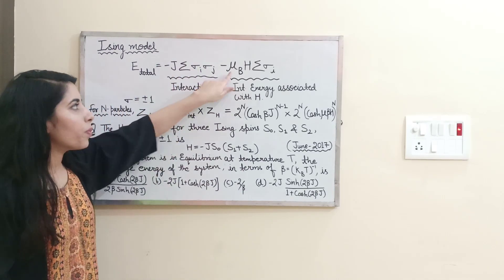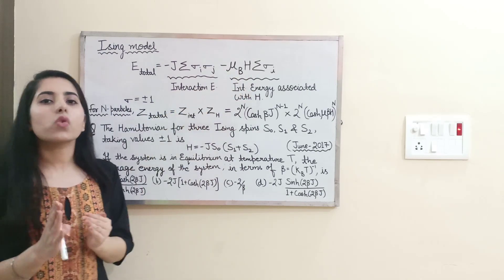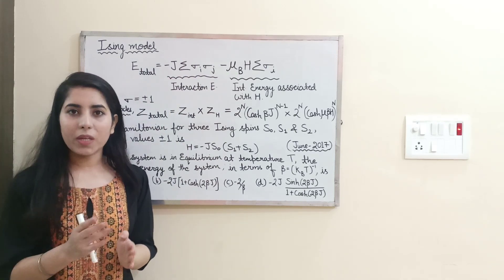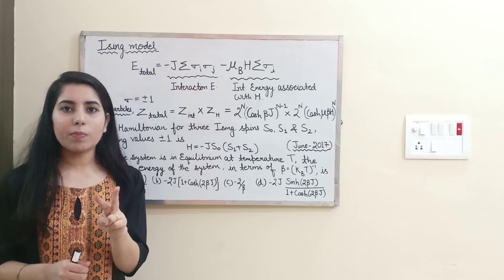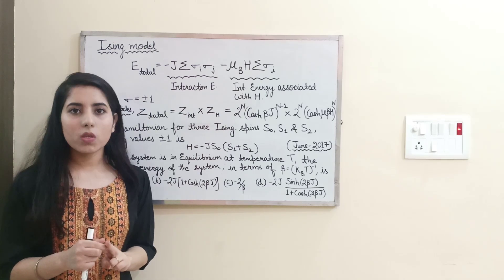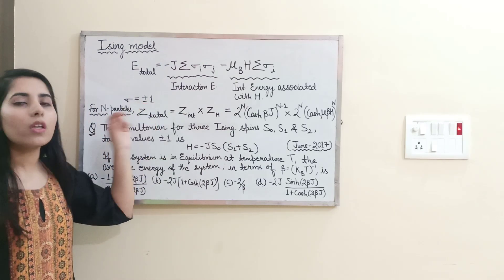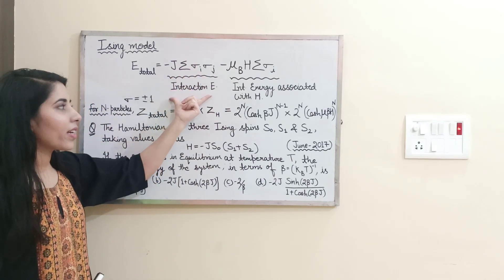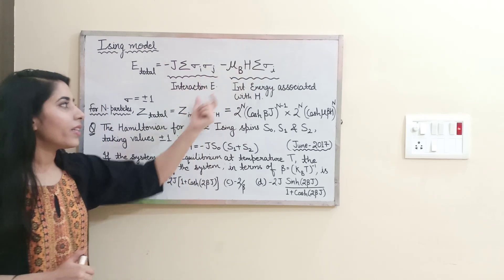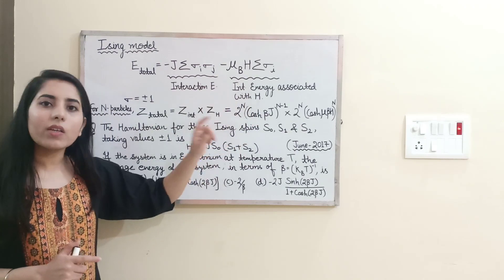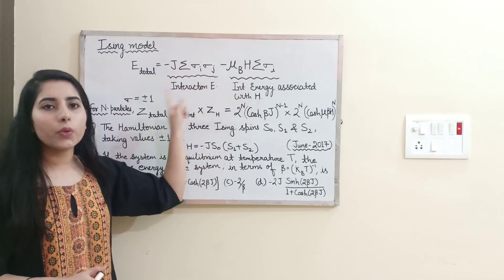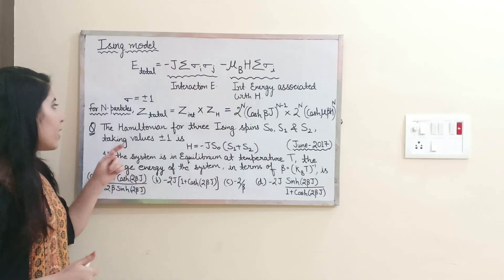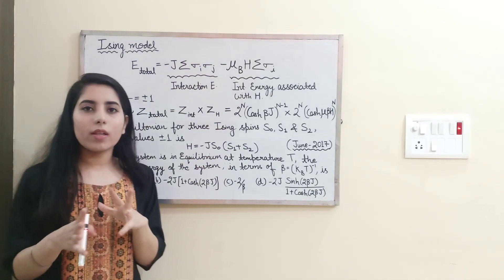In questions, μ_B and H are usually written as given — you just need to work with the sigma values. Sigma represents the Ising spin, which can only take two possible values: +1 or −1. The first term represents the interaction energy between particles, while the second term represents the interaction energy associated with the magnetic field.